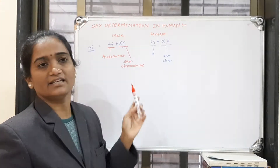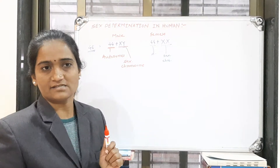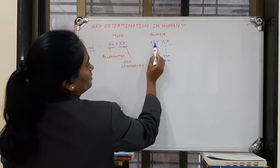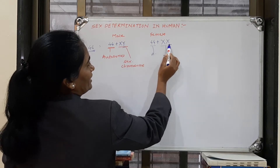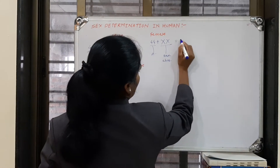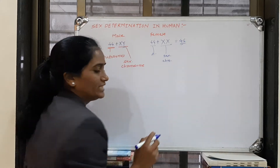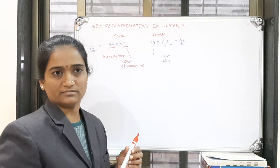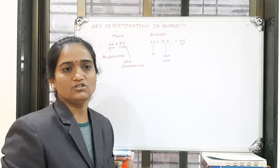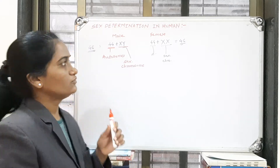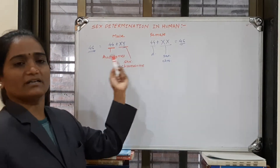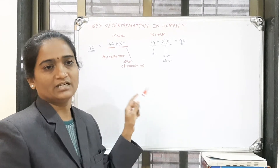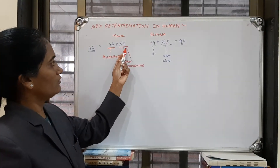In females, there is an XX chromosome pair — 44 autosomes plus XX, making 46 chromosomes total. So both males and females have 46 chromosomes in their genome. The difference is only the Y chromosome.